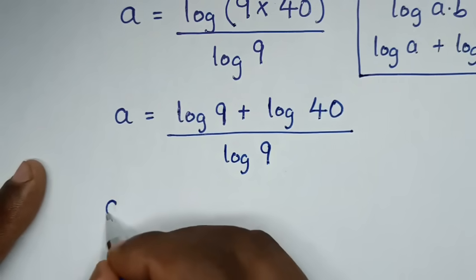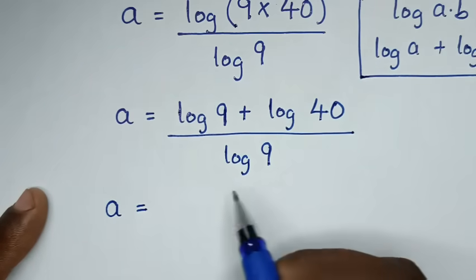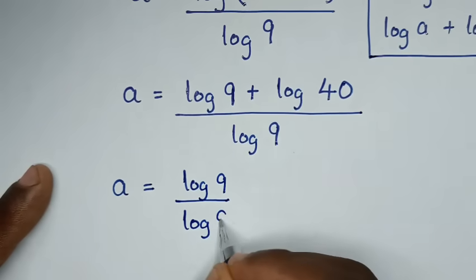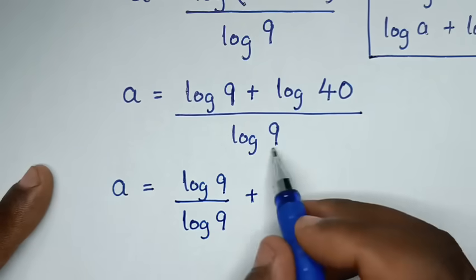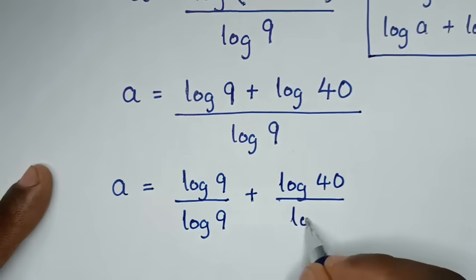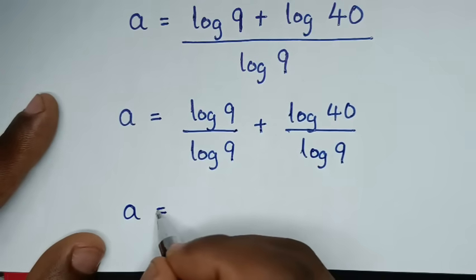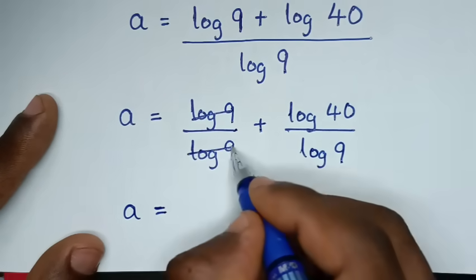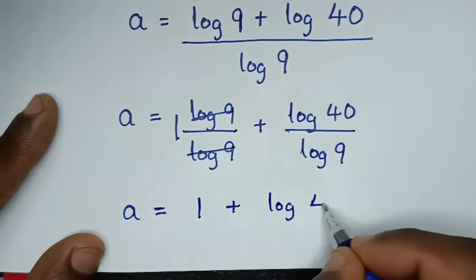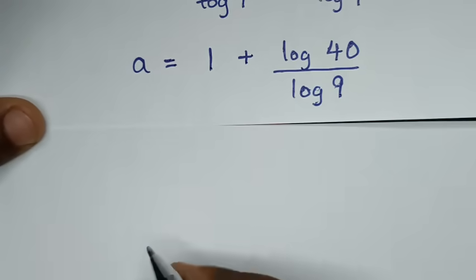Then it will be a is equal to — we'll divide by log of 9 in both parts. So it will be log of 9 over log of 9 plus log of 40 over log of 9. Now log of 9 divided by log of 9 is 1, so it will be 1 plus log of 40 over log of 9.